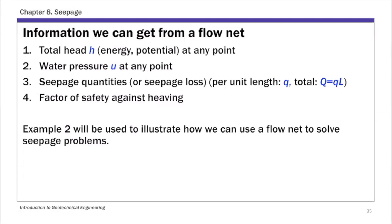For a given flow net, we can get the following information. The first is total head h — you can call this total energy or total potential, they all refer to the same thing. You can solve for the water pressure at any given point, calculate seepage quantities — small q for seepage quantity per unit length, capital Q for total seepage quantity for the entire length of the hydraulic structure — and also factor of safety against heaving.